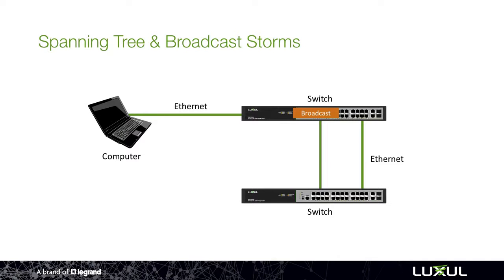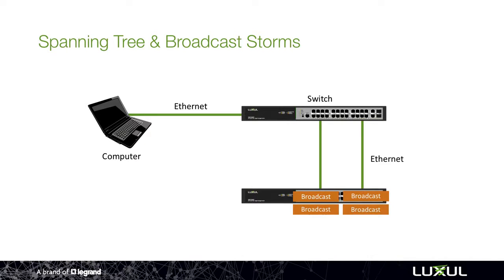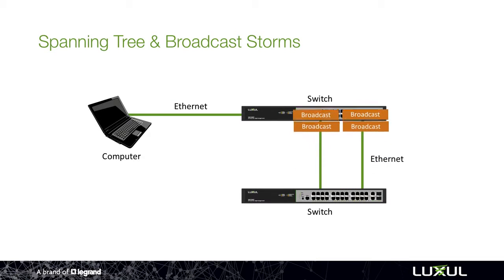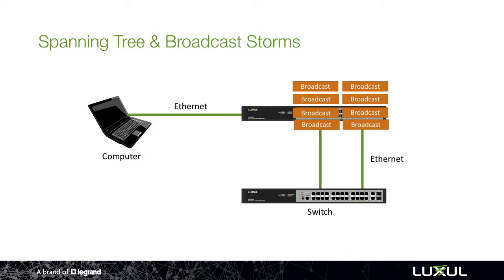What happens is this machine sends out a broadcast to that first switch, and the switch's job is to say, I know what to do with this message — I'm going to duplicate it and send it out all of my ports. It does that and sends it down both cables to that second switch. The second switch gets it and says, I know what to do with this broadcast message, I'm going to duplicate it and send it out all of my ports, and it sends it back up to that first switch. The first switch sees the message again and duplicates it again, and you can see how this is going to increase and go around and around and around, making it so that all devices on the network aren't able to process all of the information because there are too many broadcast messages at one time.